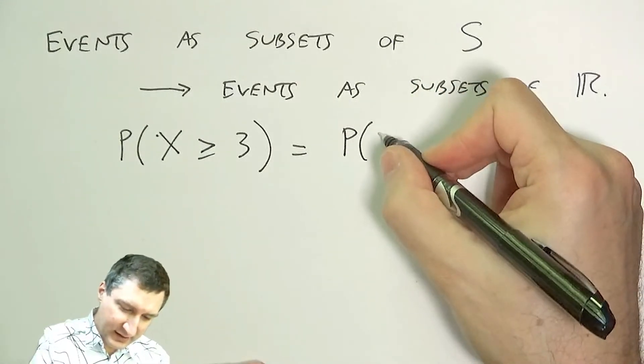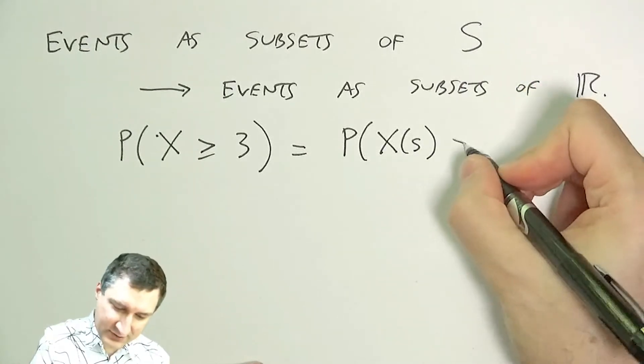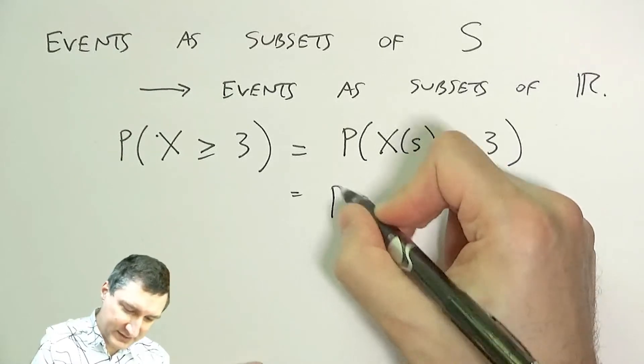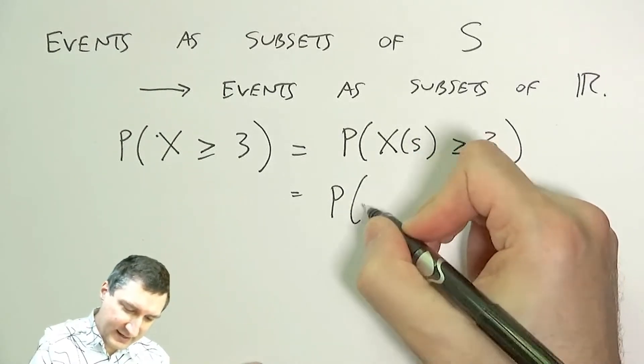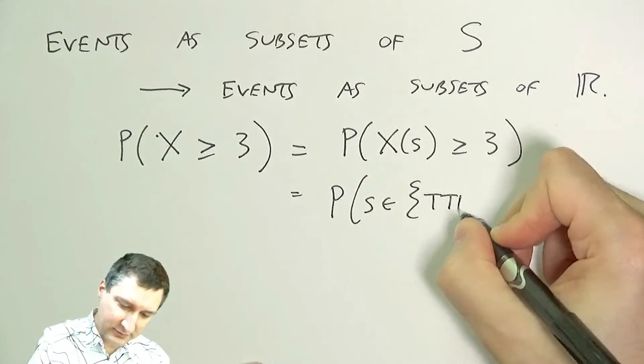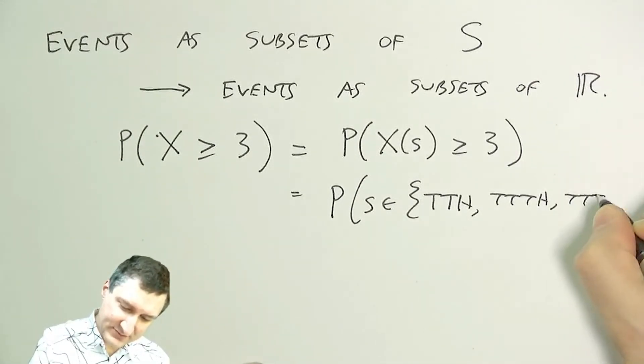And that, under the hood, is like saying what's the probability of X mapping outcomes from the original sample space to be greater than or equal to 3. It's like saying, well, it's the probability that S is in this set of original outcomes.